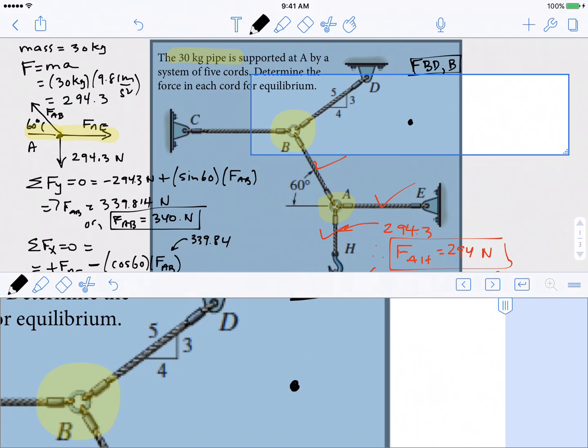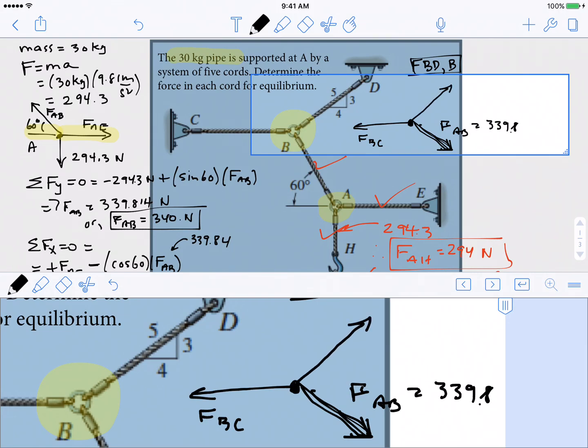Let's go ahead and write our free body diagram. When we do that, we're imagining we're point B. What are we feeling? We're feeling support or tension going off in that direction, which I'm going to call FBC. In addition, we are feeling tension going off in this direction, which is FAB. And remember, that was equal to 339.8. The last thing that B is feeling is support going off in this direction, which is FBD. We also have a little bit of geometry. That's a 3 to 4 ratio. And this is a 60 degree angle.